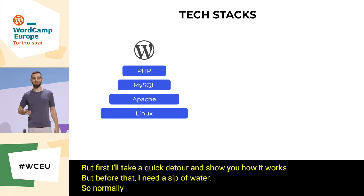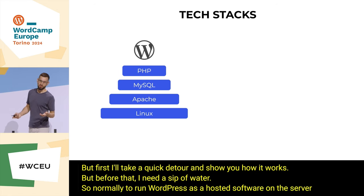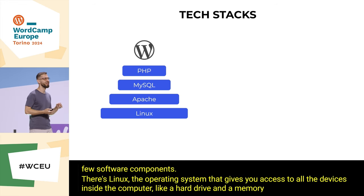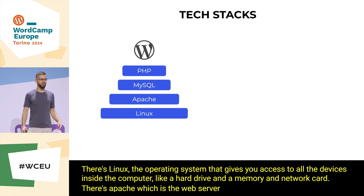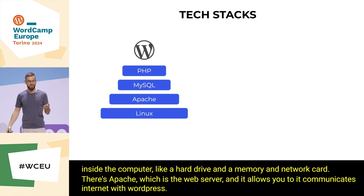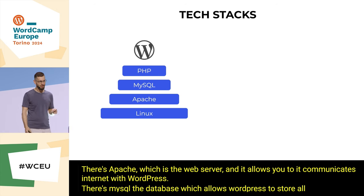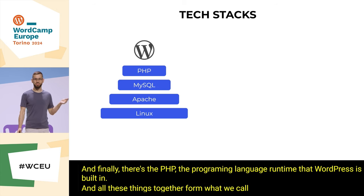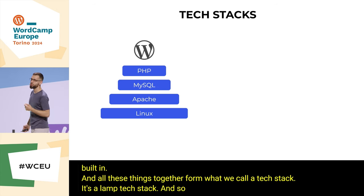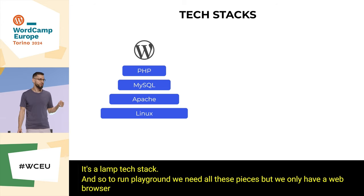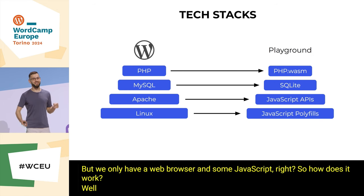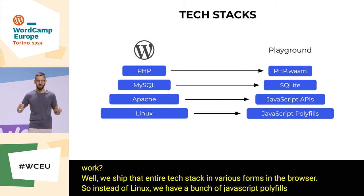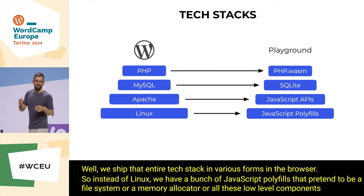Normally to run WordPress as hosted software on a server, we need a few components: Linux, the operating system giving access to hardware like a hard drive, memory, and network card; Apache, the web server that communicates with WordPress over the internet; MySQL, the database allowing WordPress to store all data; and finally PHP, the programming language runtime WordPress is built in. All these together form what we call a tech stack — the LAMP tech stack. To run playground, we need all these pieces but we only have a web browser and JavaScript.